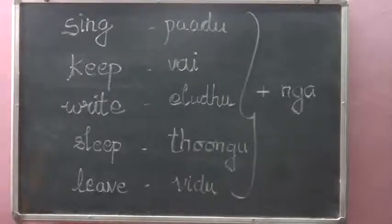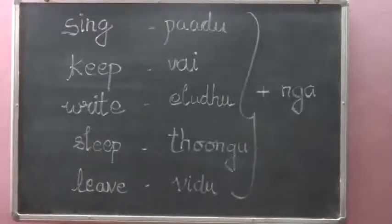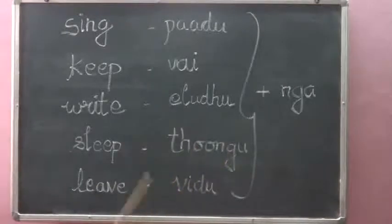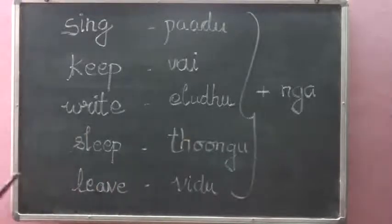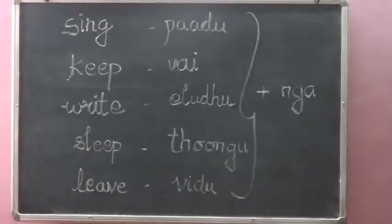The fourth word is 'sleep.' You will say 'I am getting sleep.' In Tamil you will say 'thongu.' 'Thongu' is used as a verb for sleep.